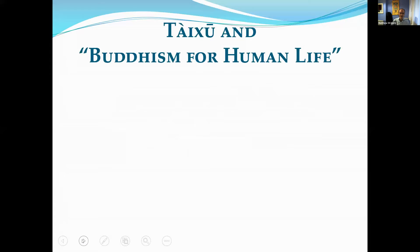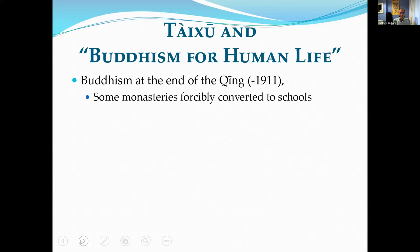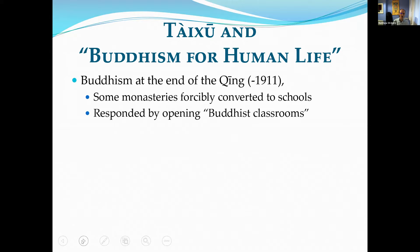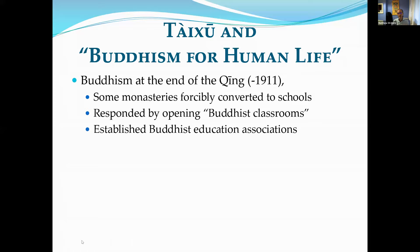At the end of the Qing dynasty around 1911, a century ago, there was a lot of pressure on Buddhism, perceived as socially non-productive. Many monasteries were being forcibly converted to schools — their lands and buildings confiscated. Some Buddhist groups responded by opening Buddhist classrooms, reasoning that if they ran their own schools, the government wouldn't take their buildings. They also established more Buddhist educational associations, lay groups, and regular schools for children, making education a greater focus for what Buddhism should be doing in the Republic of China.